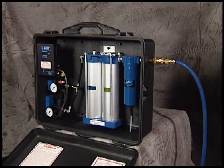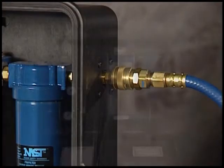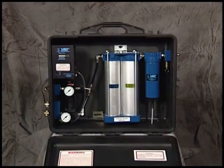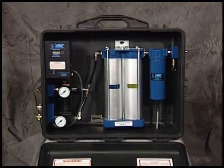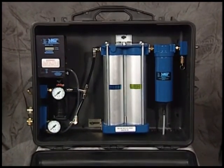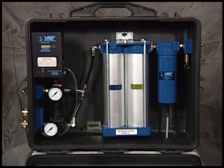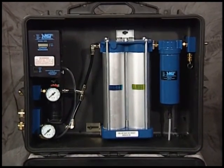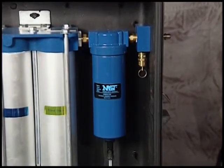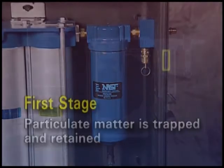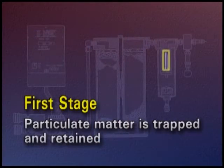Air entering the Respiratory Protector filtration system at the inlet is usually contaminated with oil, water, rust, scale, and often deadly carbon monoxide gas. As the air passes through the first stage of the MST pre-filter, particulate matter is trapped and retained.